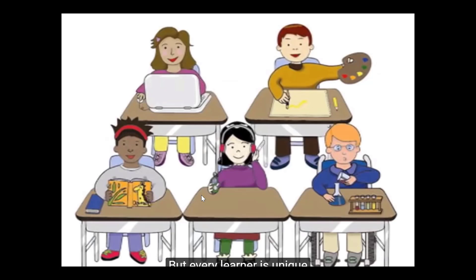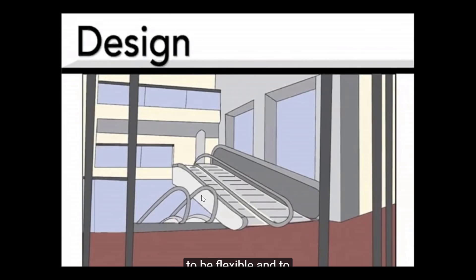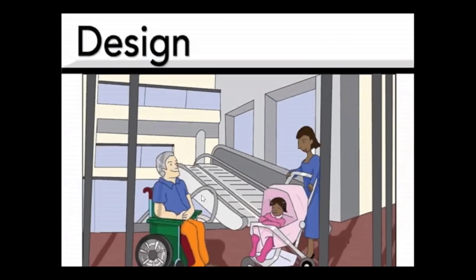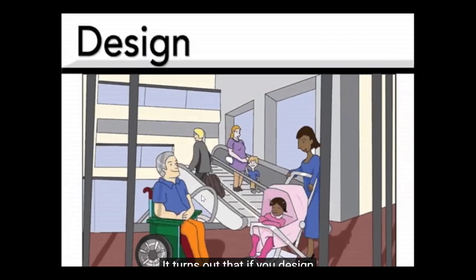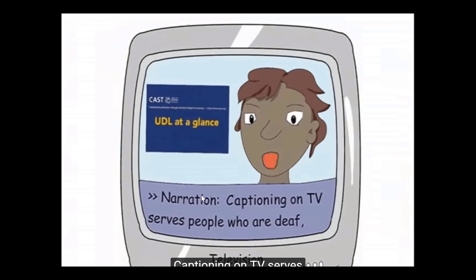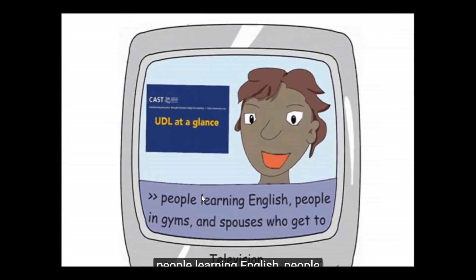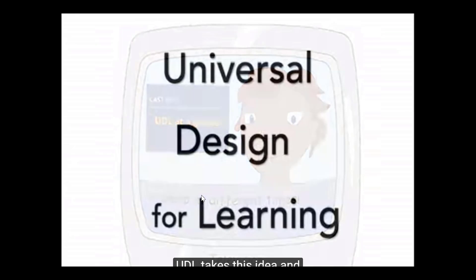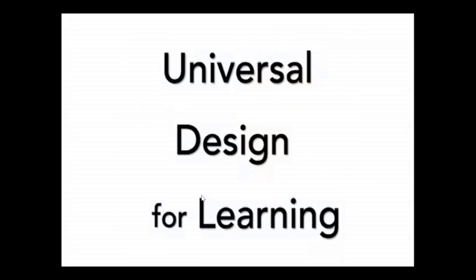Every learner is unique, and one size does not fit all. A universally designed building is planned to be flexible and accommodate all kinds of users, with and without disabilities. If you design for those in the margins, your building works better for everyone. Curb cuts and ramps are used by people in wheelchairs, people with strollers, and people on bikes. Captioning on TV serves people who are deaf, people learning English, people in gyms, and spouses who get to sleep at different times.